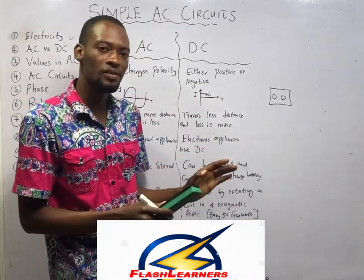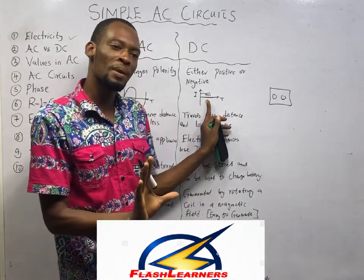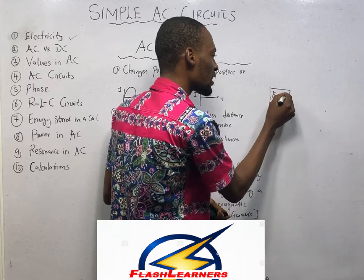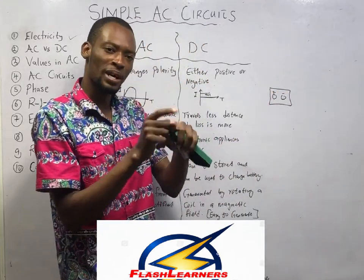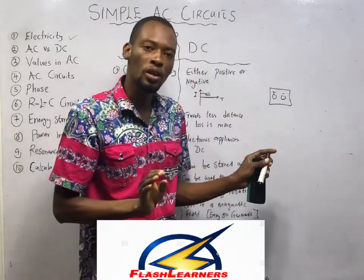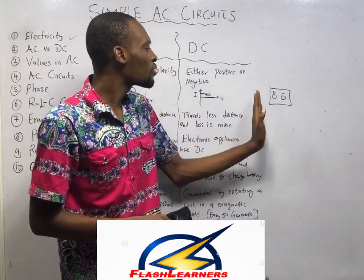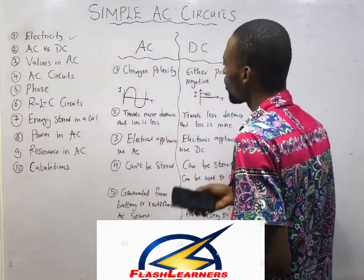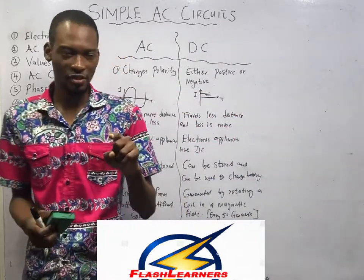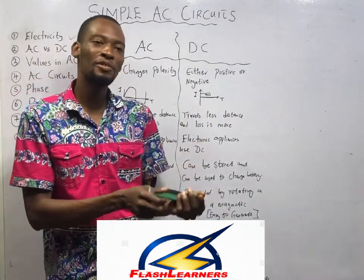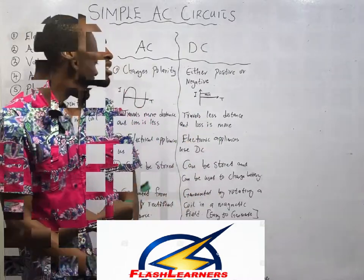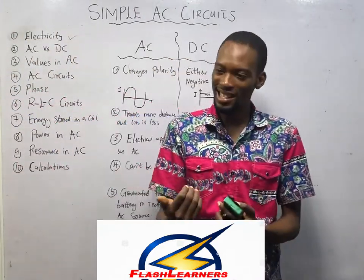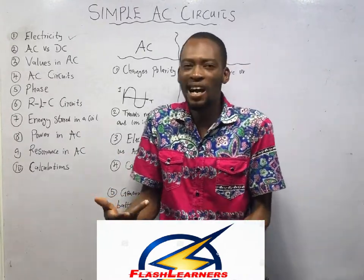For DC, you have two terminals: one is plus and the other is negative. The poles or charges are constant. Secondly, alternating currents travel more distance with less loss, while direct currents travel less distance with more loss. Electrical appliances use AC — they use higher power — while electronic appliances like your LED TV use much less power than your washing machine or fridge. Electronics like your TV, laptop, and decoders don't use AC; they use direct current.